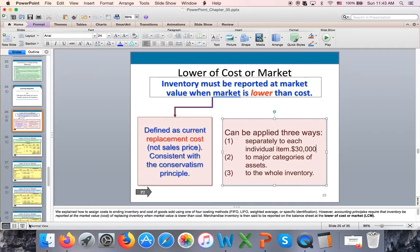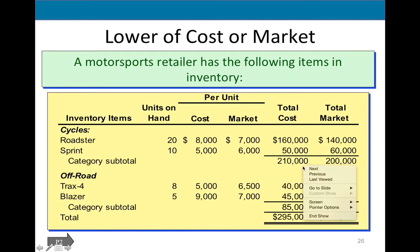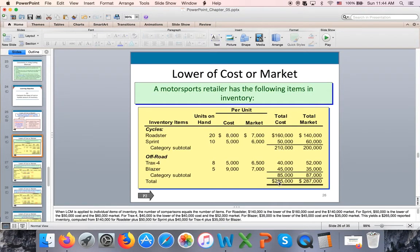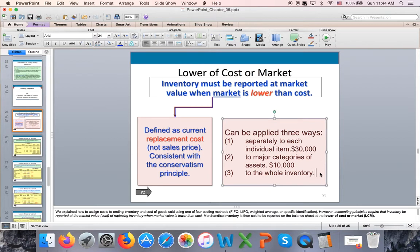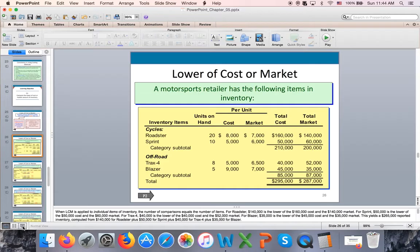If I go by major categories: I look at the first category — $210,000 versus $200,000 — do I have to adjust? Yes, by $10,000. Second category subtotal — no adjustment needed. So going by major categories, I only lose $10,000. And if I go by the whole inventory: $295,000 versus $287,000 — adjust by $8,000. The best application of LCM is to use the whole inventory because net income is then decreased only by $8,000.